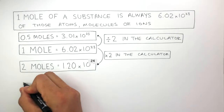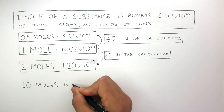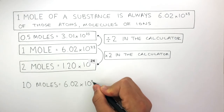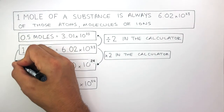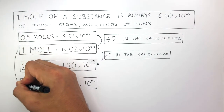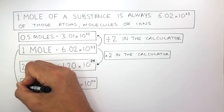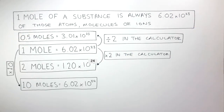And finally, 10 moles equals 6.02 times 10 to the power of 24. All you do is multiply 6.02 times 10 to the power of 23 by 10 in your calculator.